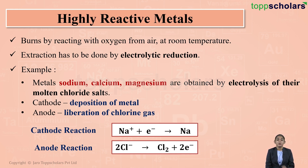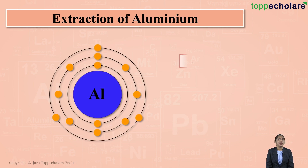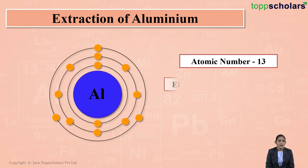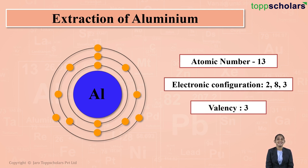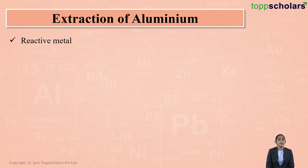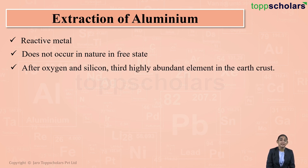Now we'll discuss how we extract the highly reactive metal aluminium. Aluminium has atomic number 13, so its electronic configuration is 2, 8, 3 — meaning 3 electrons are present in the valence shell, giving aluminium a valency of 3. Since aluminium is placed at the top of the reactivity series, it is highly reactive and does not occur in nature in the free state.